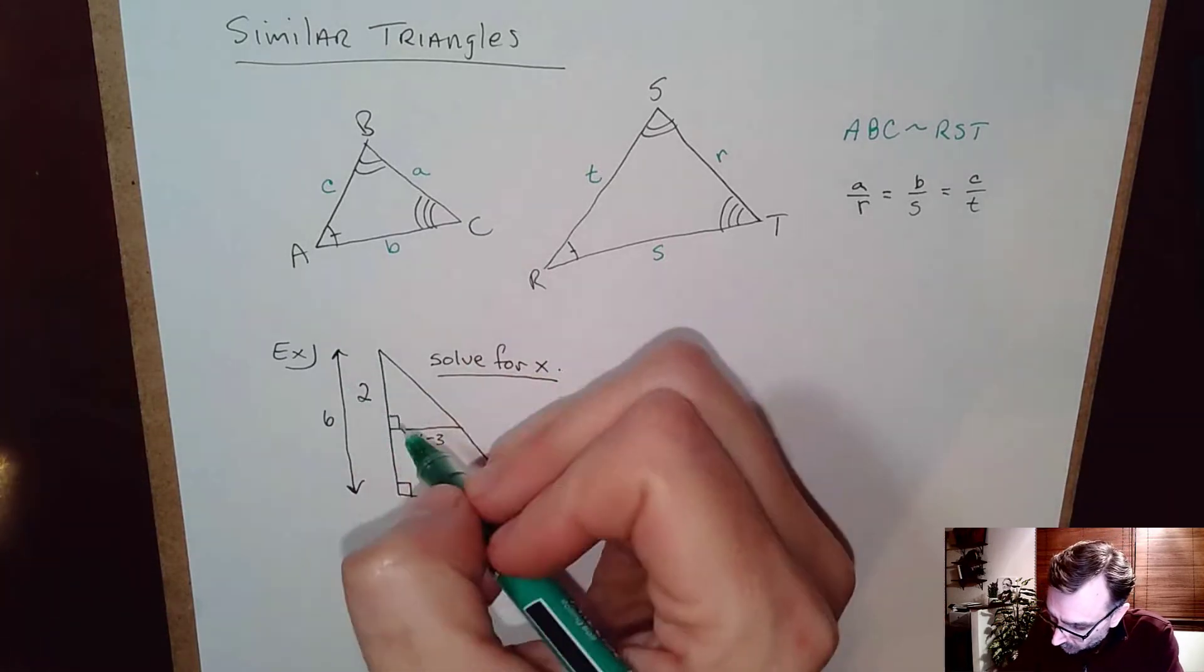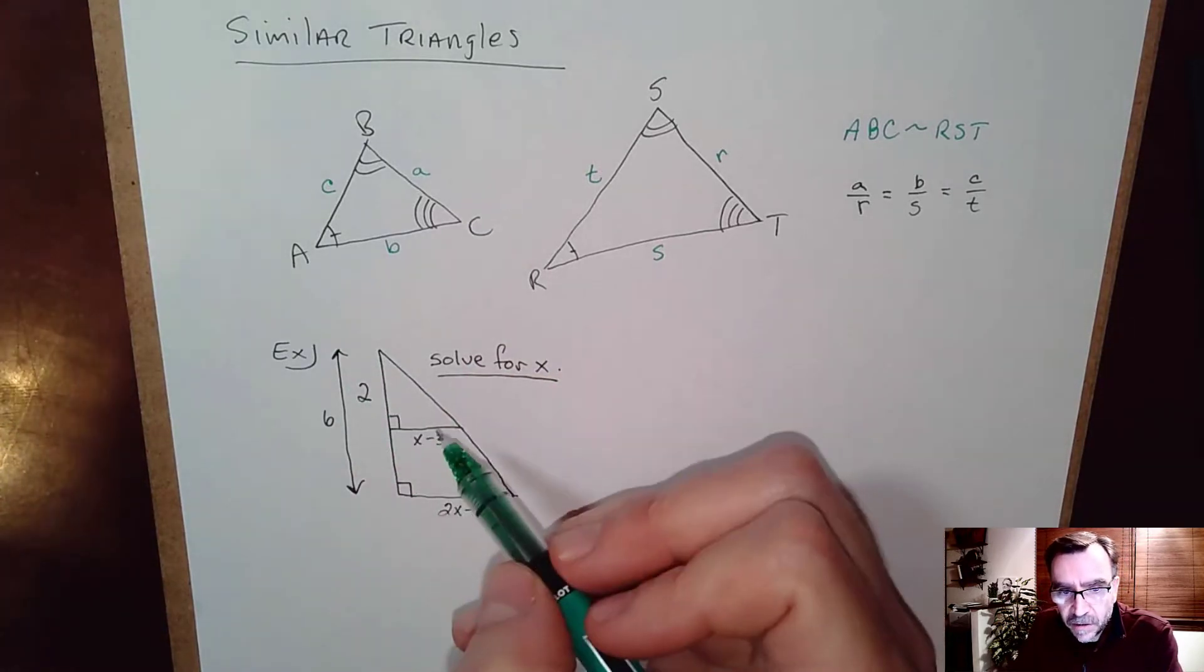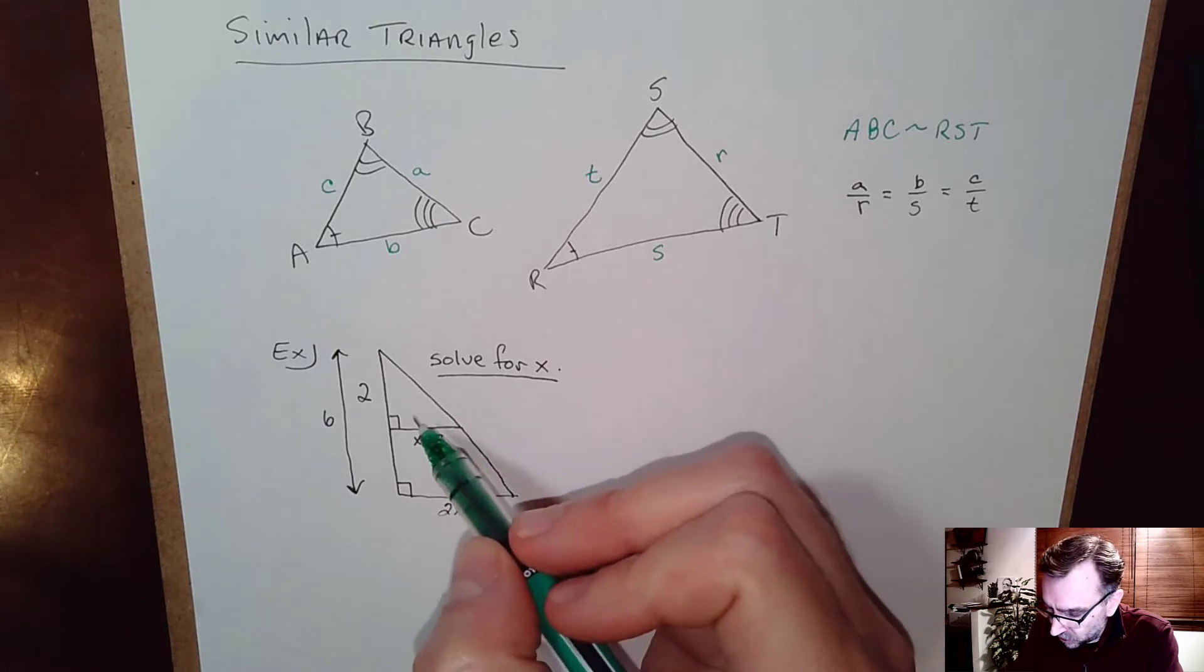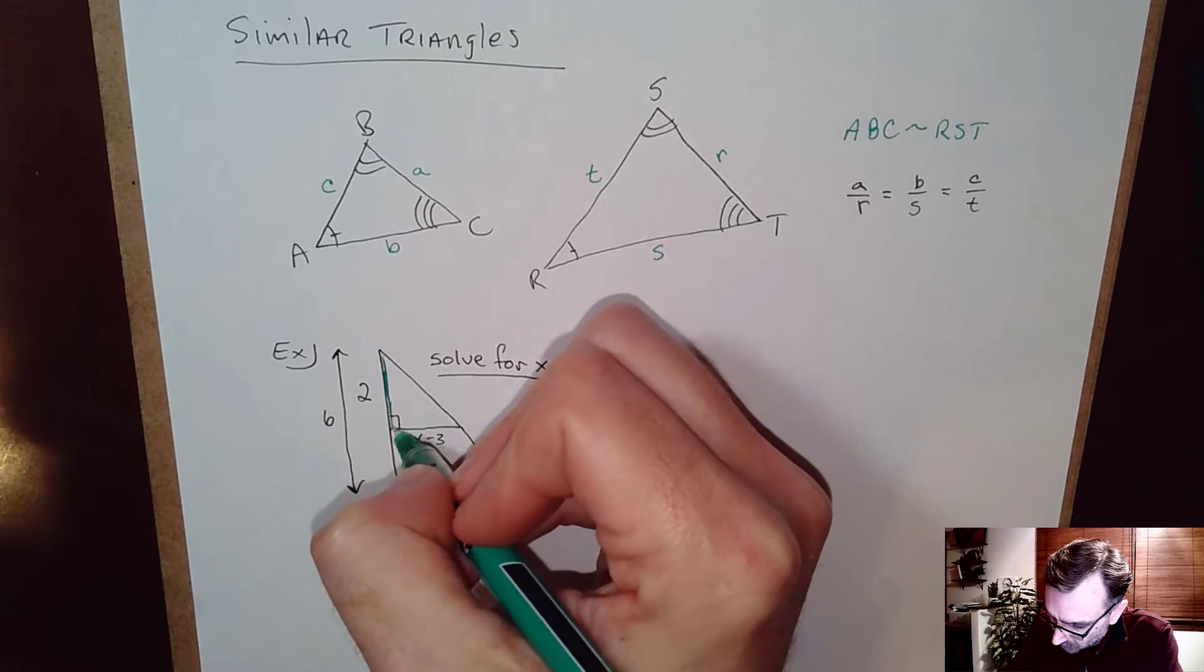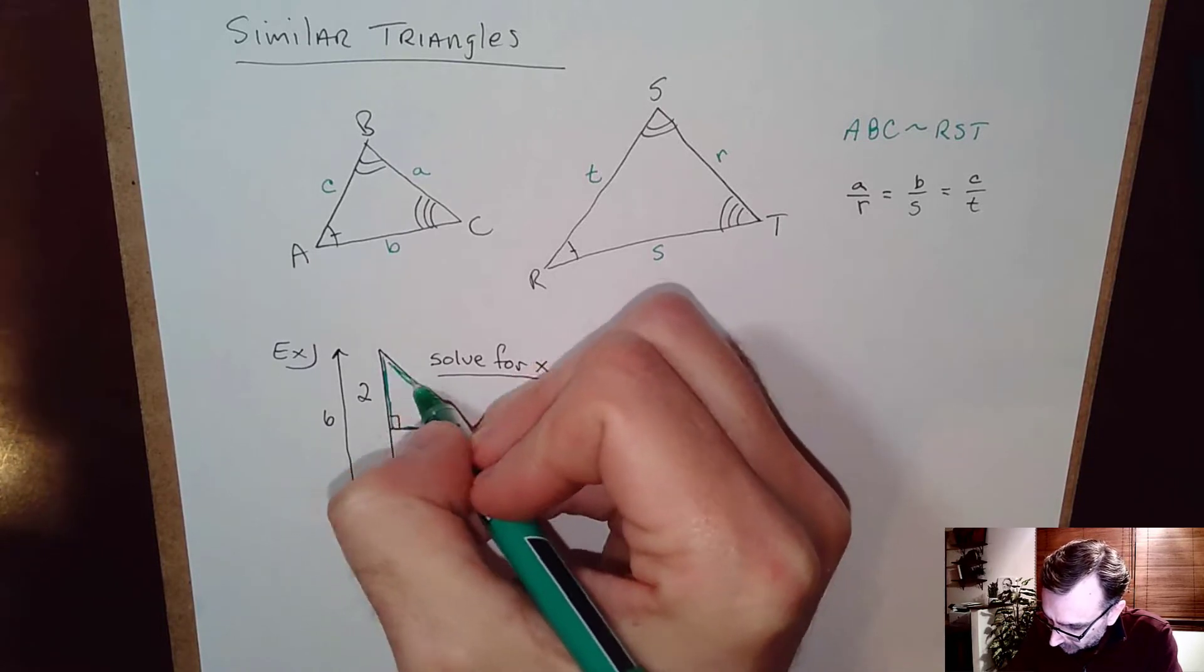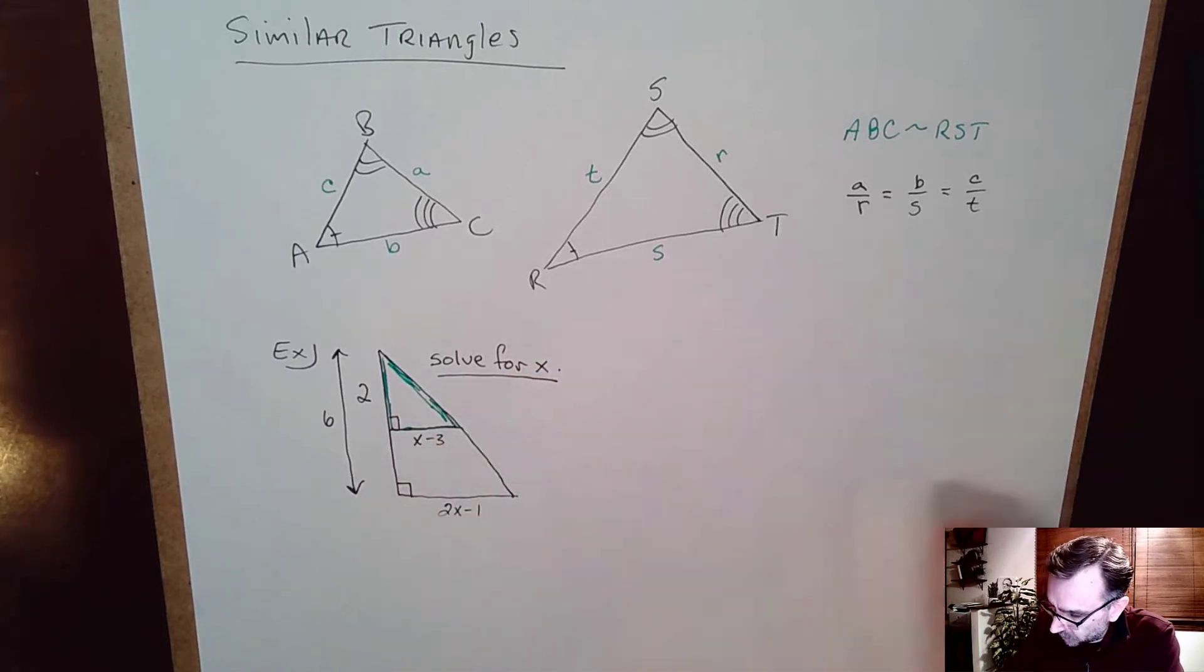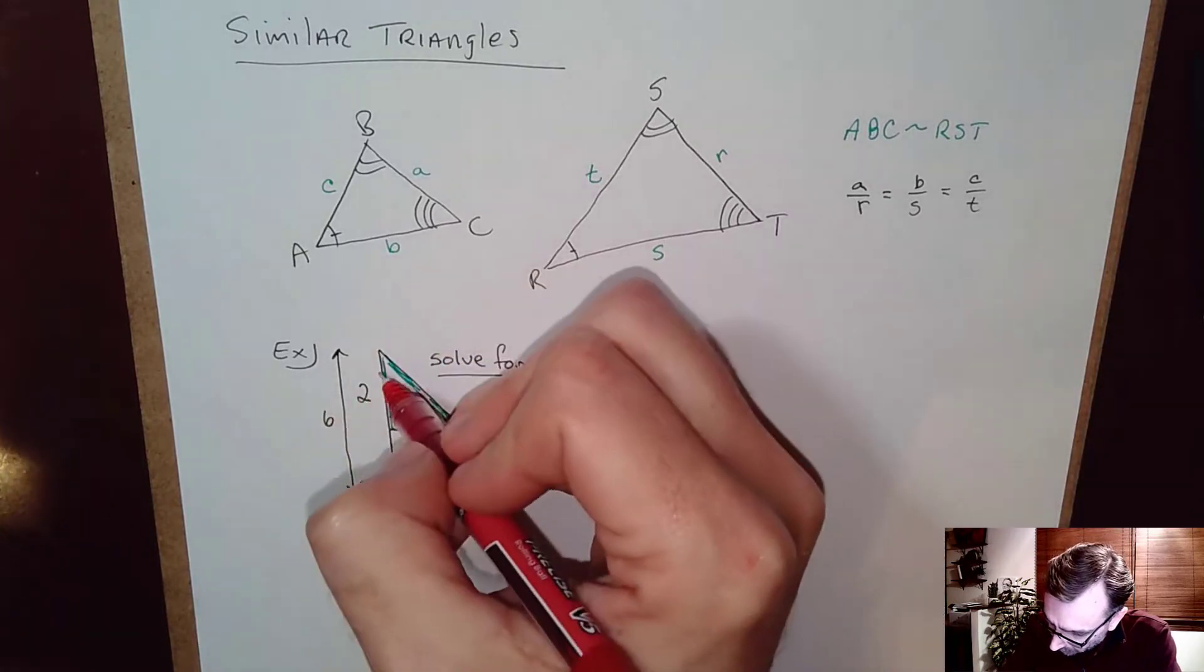Alright so when I look at this first example here we're given two triangles. You have the small triangle and the big triangle on the outside. So this small triangle is actually similar to the big triangle because all the angles are equal.